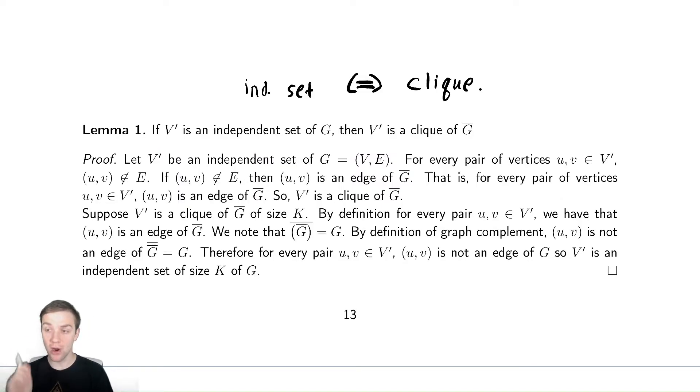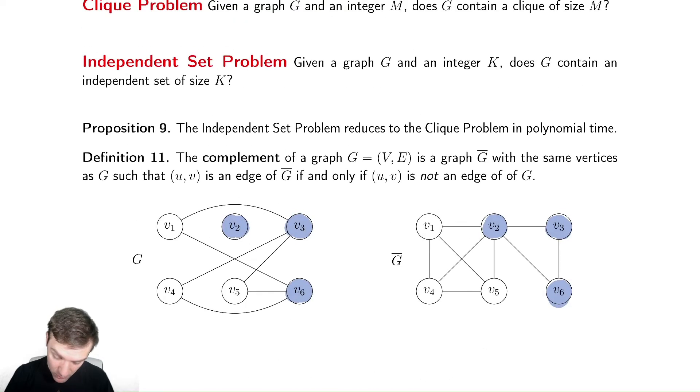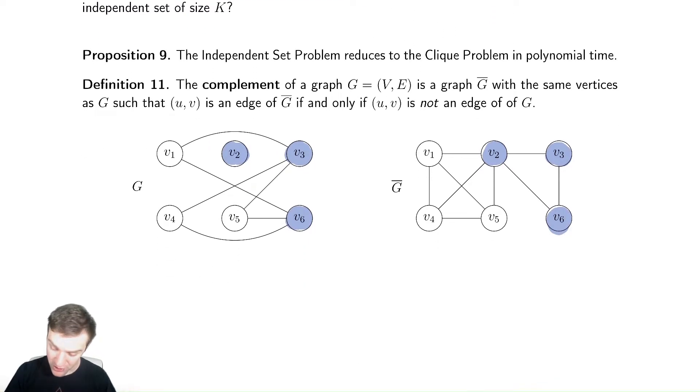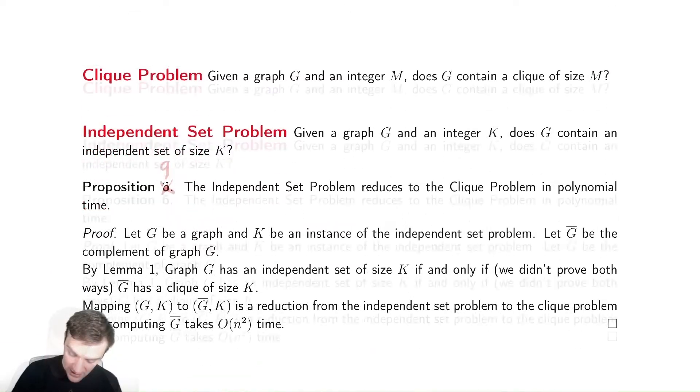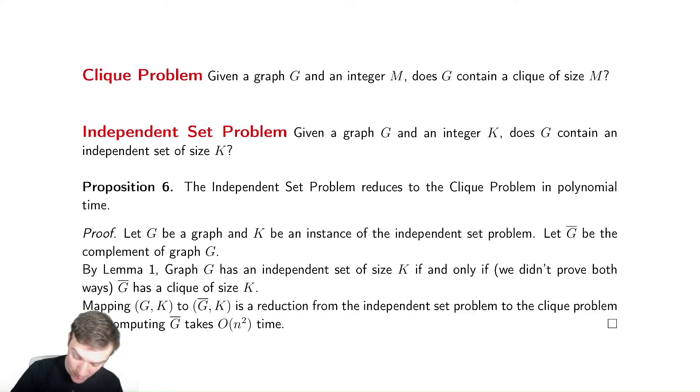Now let us prove our proposition we claimed up here, which was that the independent set problem reduces to the clique problem in polynomial time. I have a typo here in my notes that I will mention. This should be proposition 9. Hopefully we will update it in your version. It's not too important. All that matters is the claim in the proposition. This says that the independent set problem reduces to the clique problem. Again, remember, if we want to show clique is NP complete, we need to take some NP complete problem and reduce it to clique in polynomial time.